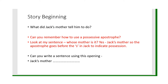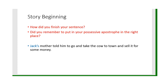Now then, what did Jack's mother tell him to do? We've done possessive apostrophes — look at my sentence. Whose mother is it? Yes, it's Jack's mother, so the apostrophe goes before the S. Jack's mother — what did she tell him to do? Yeah, he had to go and sell that cow, didn't he. She told him to go and take the cow to town and sell it for some money. You can see that I've used Jack's with the apostrophe S.